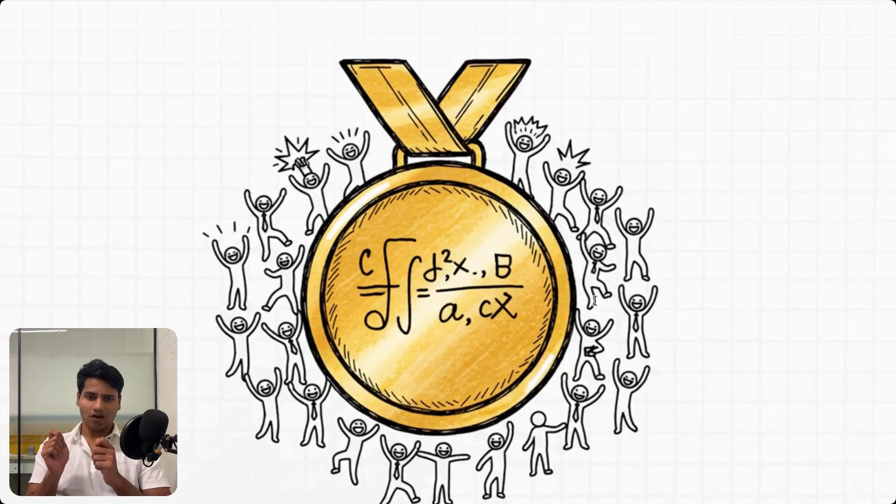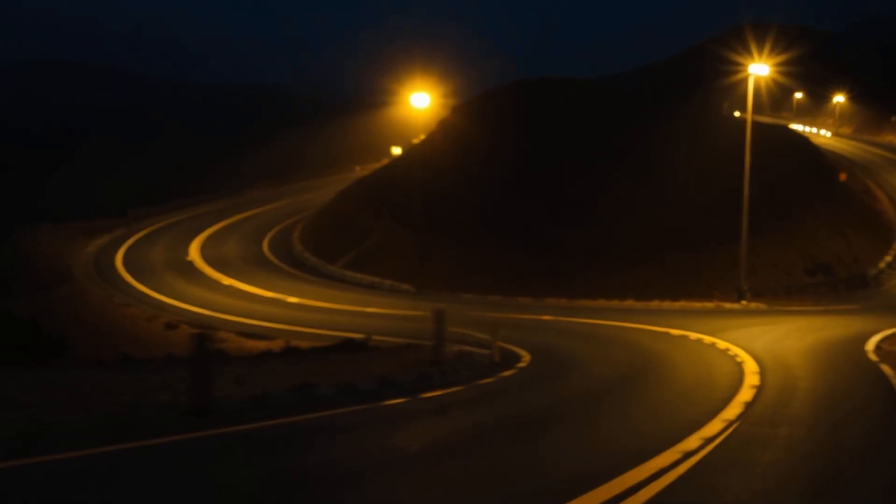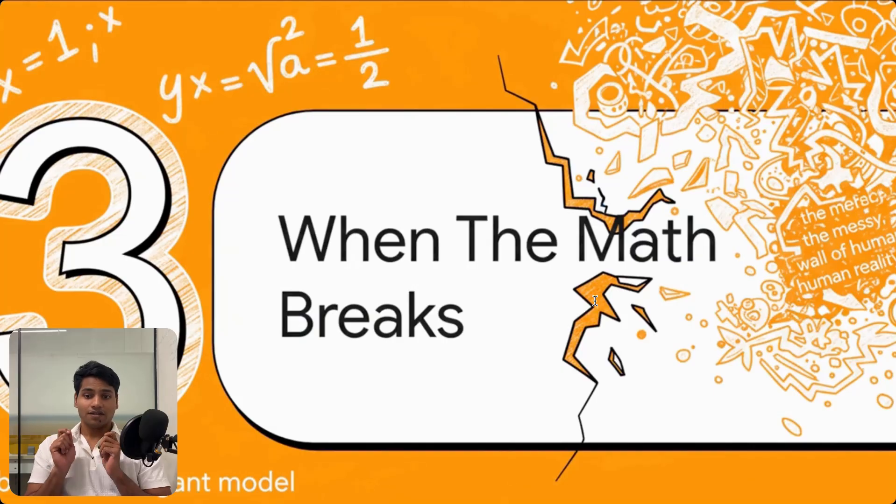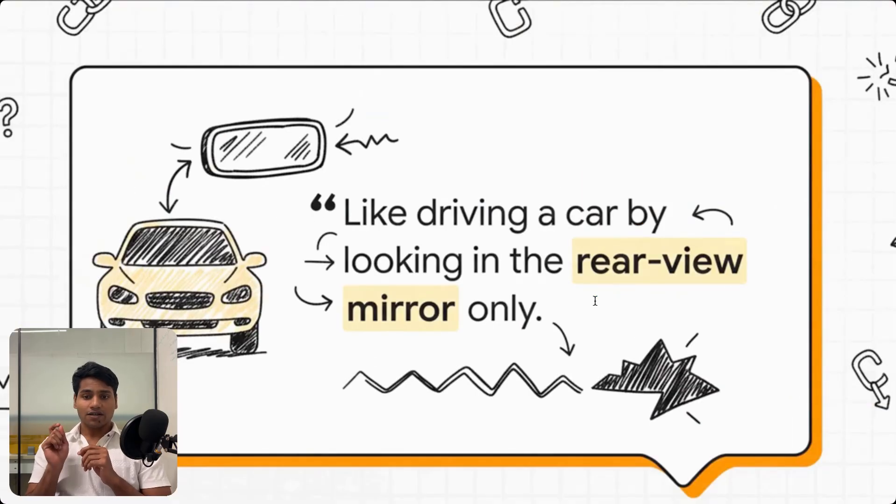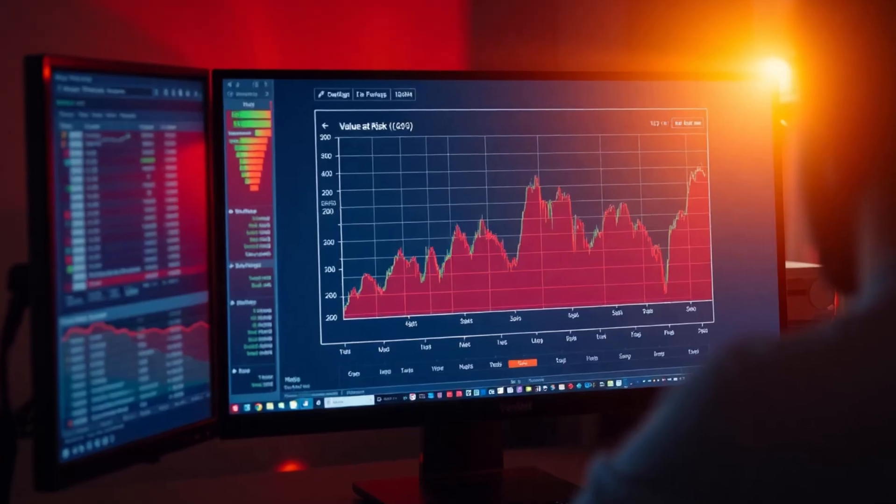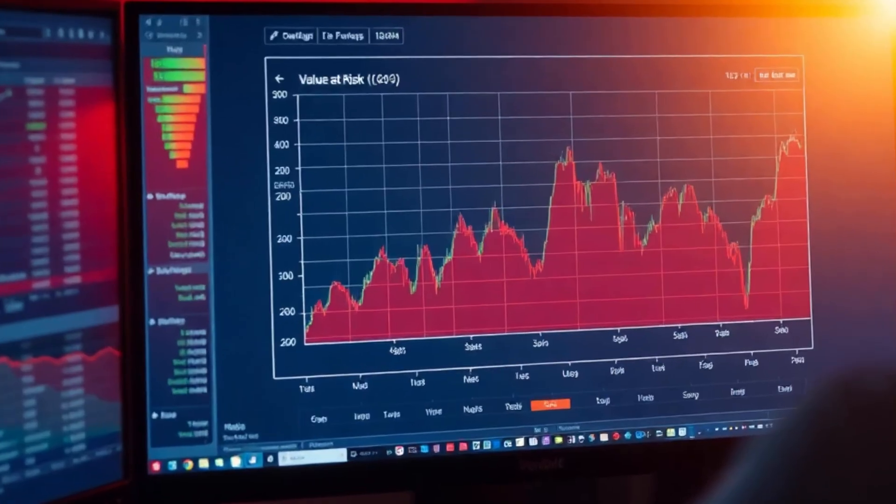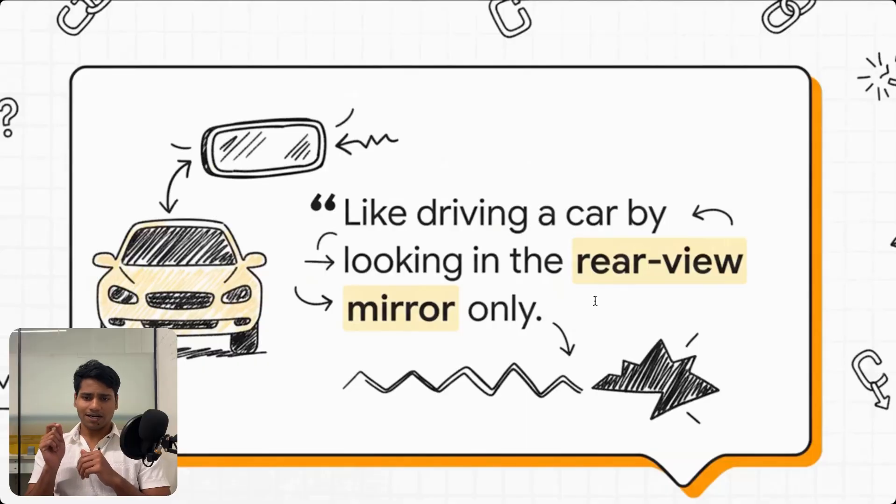So what happens when these beautiful, clean, logical models collide head-on with messy, unpredictable human reality? Well, this is where the story takes a sharp turn. This is the fundamental problem with a lot of these risk models. Take a super popular one called Value at Risk, or VaR. Its whole job is to predict risk, but it does it by looking only at what's already happened in the past.